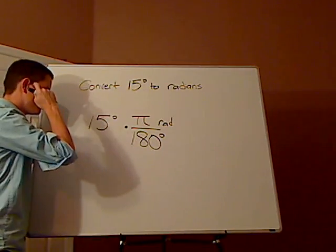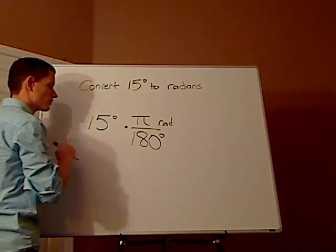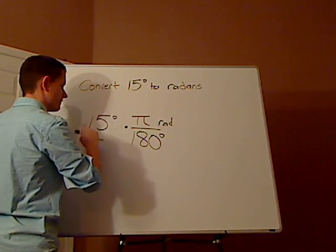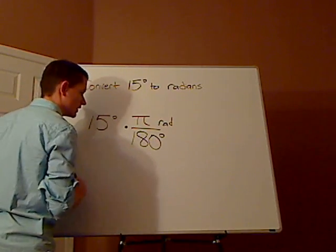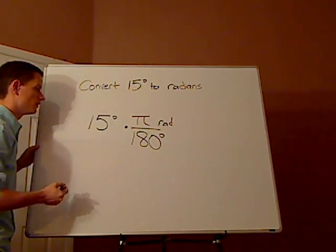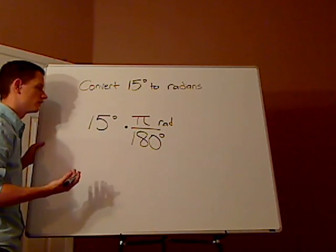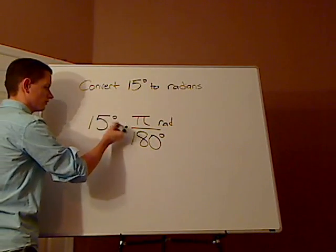So then you start canceling things out. What number goes into both 15 and 180? Yeah. Fifteen. Right. You could have said three. That would be true. Let's do that.